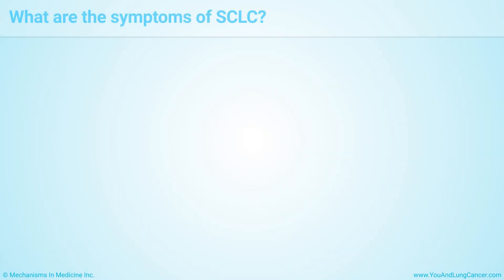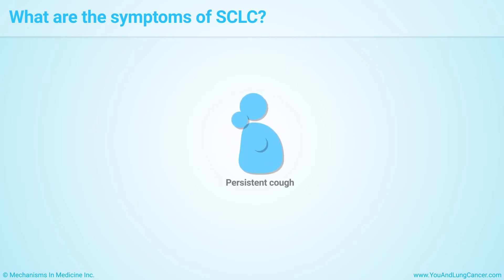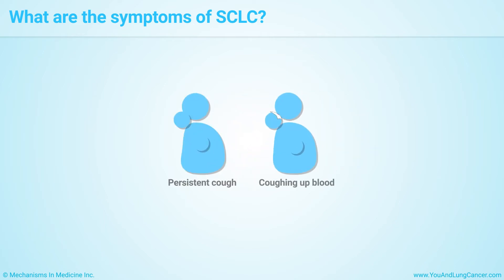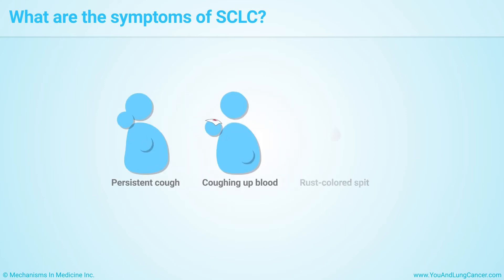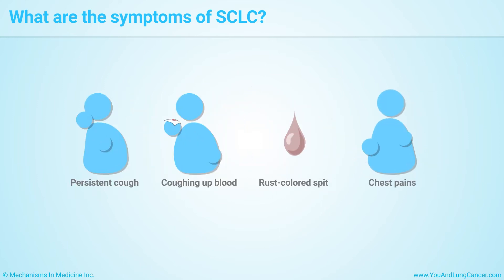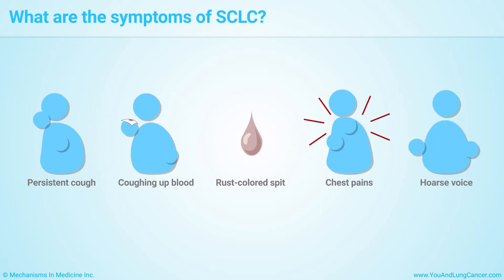The symptoms of small cell lung cancer are not specific. Possible symptoms are: a cough that won't go away or gets worse, coughing up blood, rust-colored spit, chest pains that get worse if you take deep breaths, cough, or laugh, and hoarse voice.